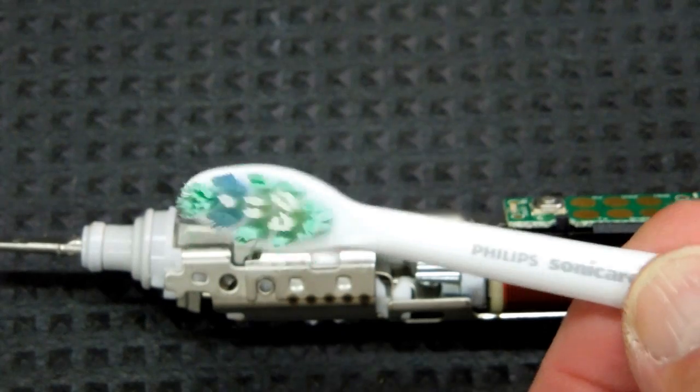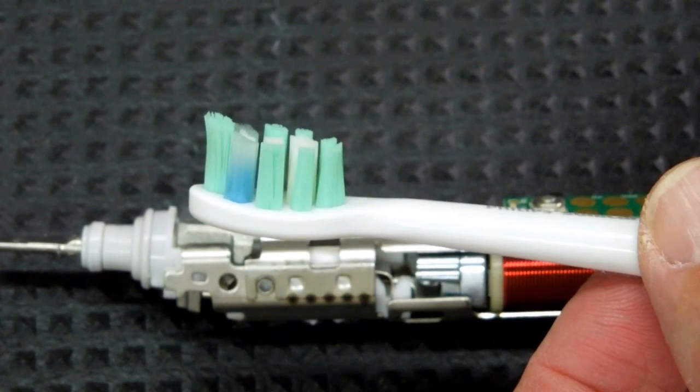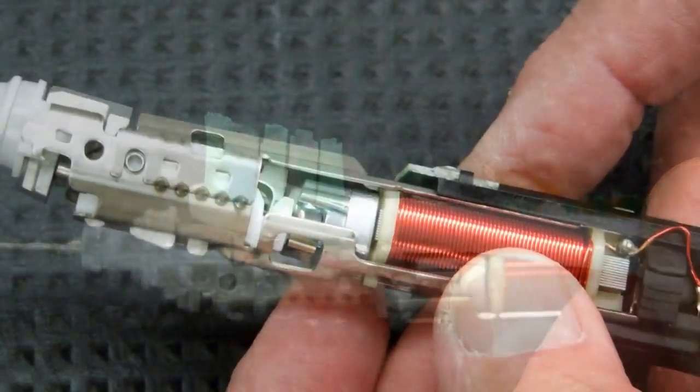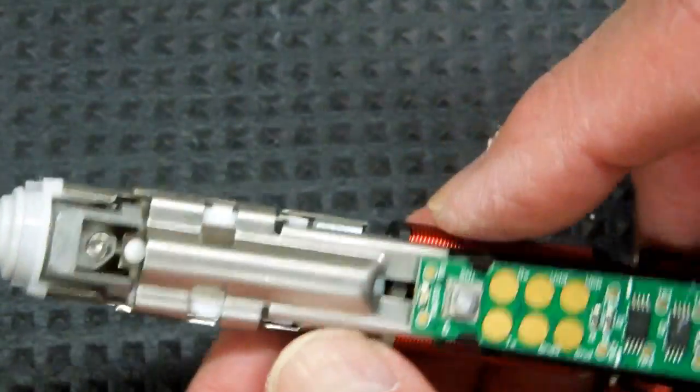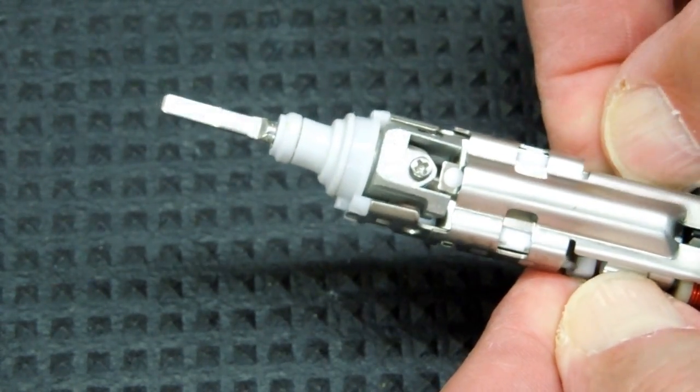This toothbrush just oscillates back and forth. There's no rotary motion here. So this really isn't a motor. It's a magnetic oscillator that causes that head to rotate that much.